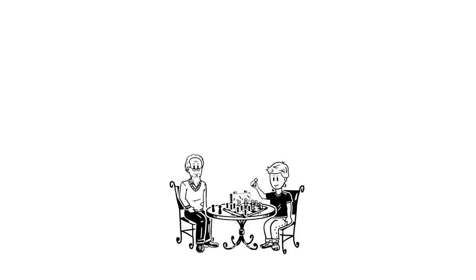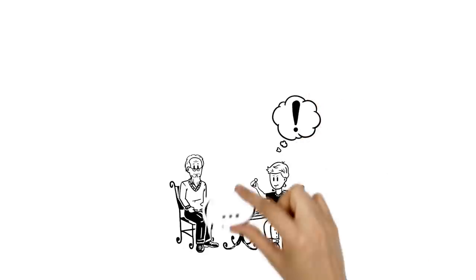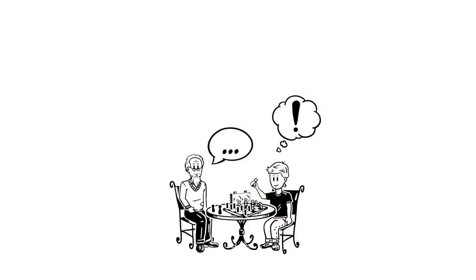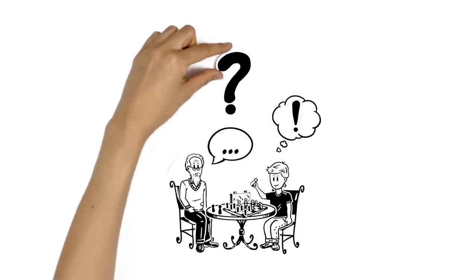They are playing chess, but suddenly Mike notices something very strange. His grandfather can't speak properly and his face looks different. What is going on?